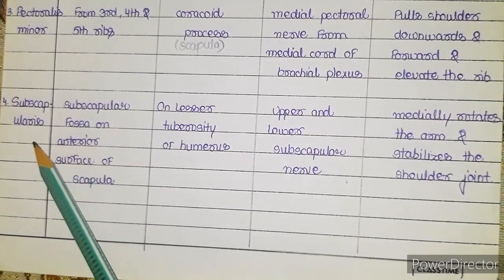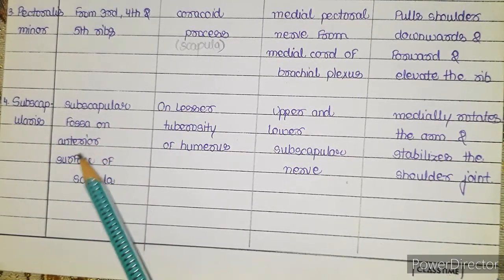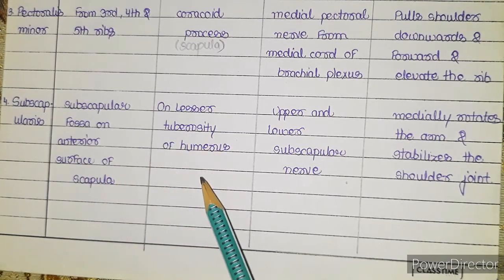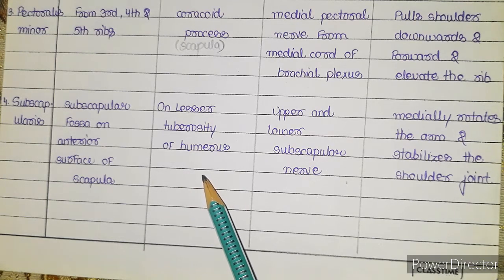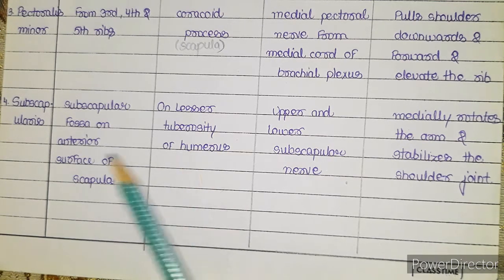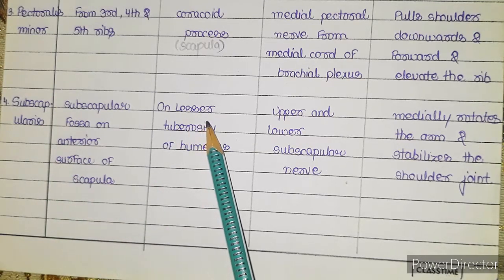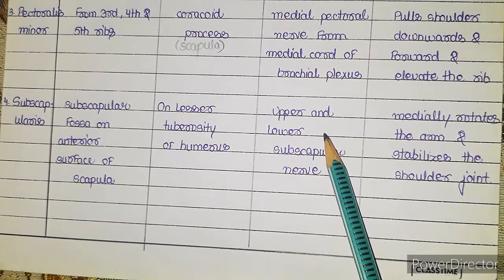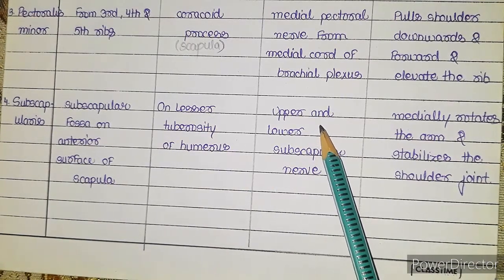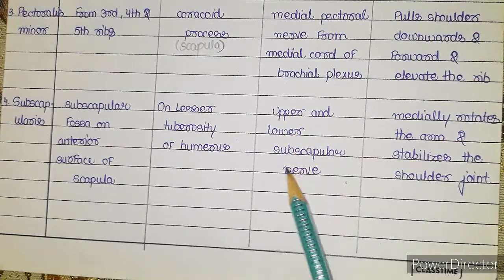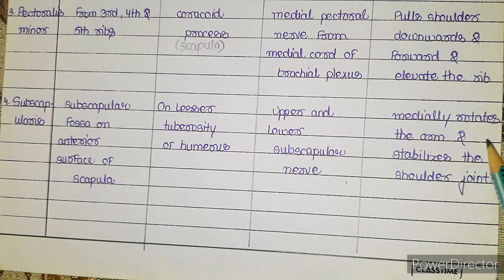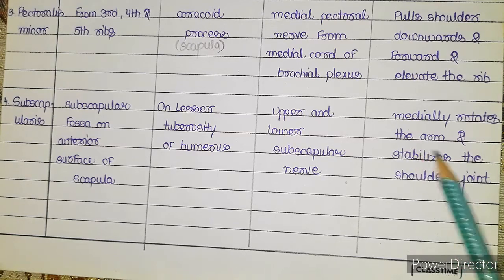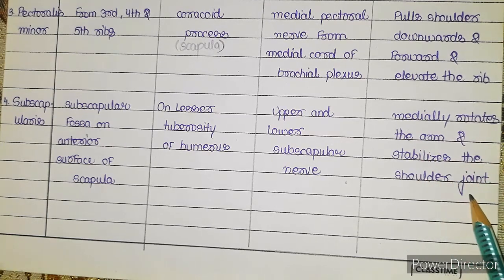The fourth muscle is the subscapularis. It originates from the subscapular fossa on the anterior surface of the scapula and inserts on the lesser tuberosity of the humerus. The humerus has two tuberosities — the greater and lesser. The nerve supply is from the upper and lower subscapular nerves. The action of this muscle is that it medially rotates the arm and stabilizes the shoulder joint.